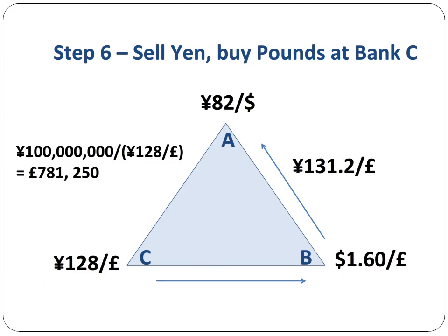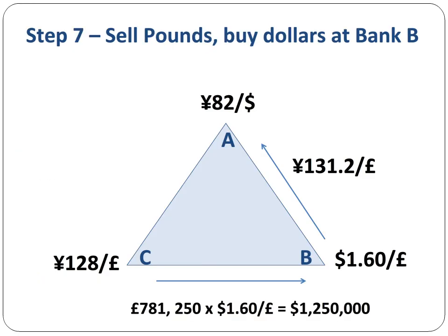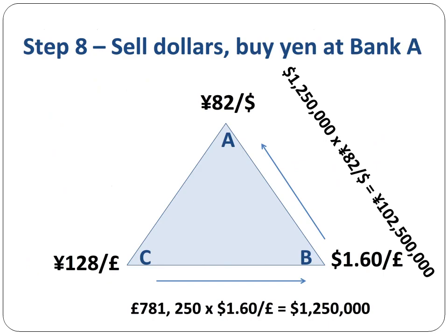In step 6, we sell 100 million yen to Bank C and receive 781,250 British pounds. Now we sell the pounds to Bank B and receive 1,250,000 US dollars. We make the final transaction with Bank A and sell the dollars to Bank A to receive yen. We now wind up with a higher yen amount than we started out with.